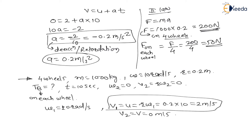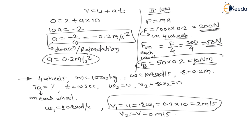Now, to find braking torque on each wheel: torque = force × radius. So braking torque on one wheel = 50 × 0.2 = 10 Newton-meter. Therefore, the answer for this question is 10 Newton-meter.